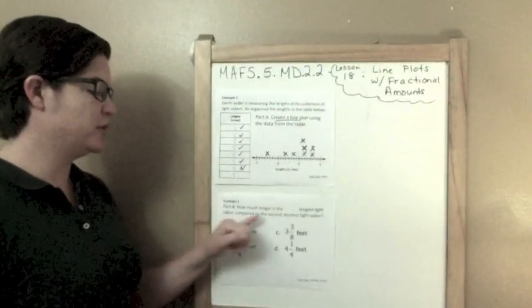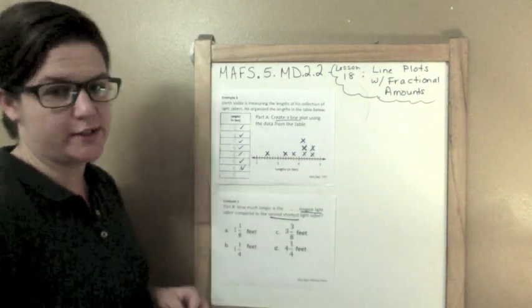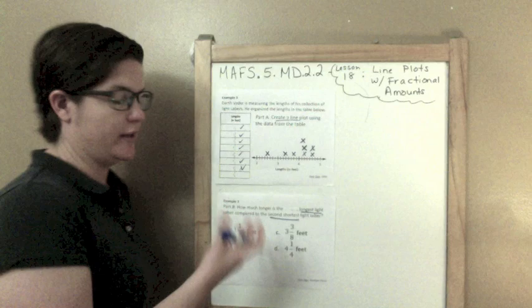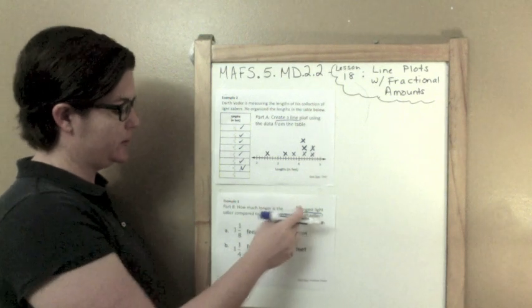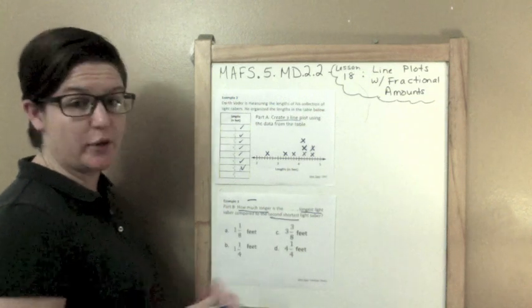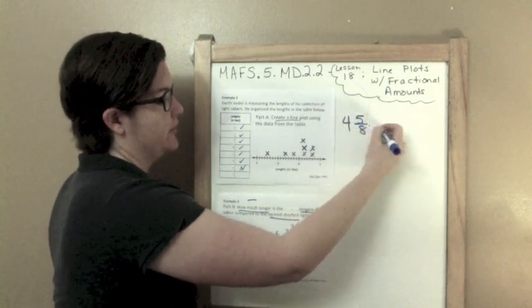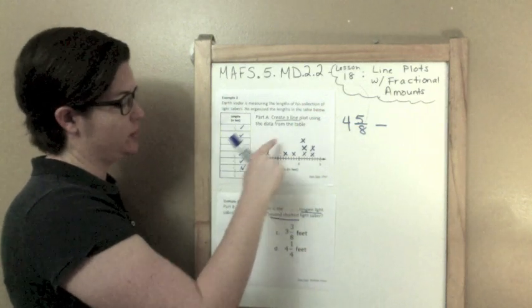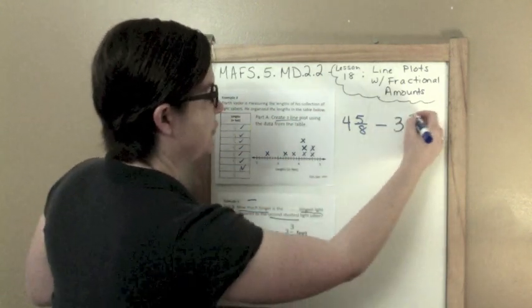Part B. How much longer is the longest lightsaber compared to the second shortest lightsaber? Notice how I underline the important parts of that problem. In the computer-based test, you'd be able to highlight if you wanted to. So we're going to see how much longer, that means we're subtracting the longest from the second shortest. The longest one would be 4 and 5 eighths, and we're subtracting the second shortest, which was 3 and 3 eighths.